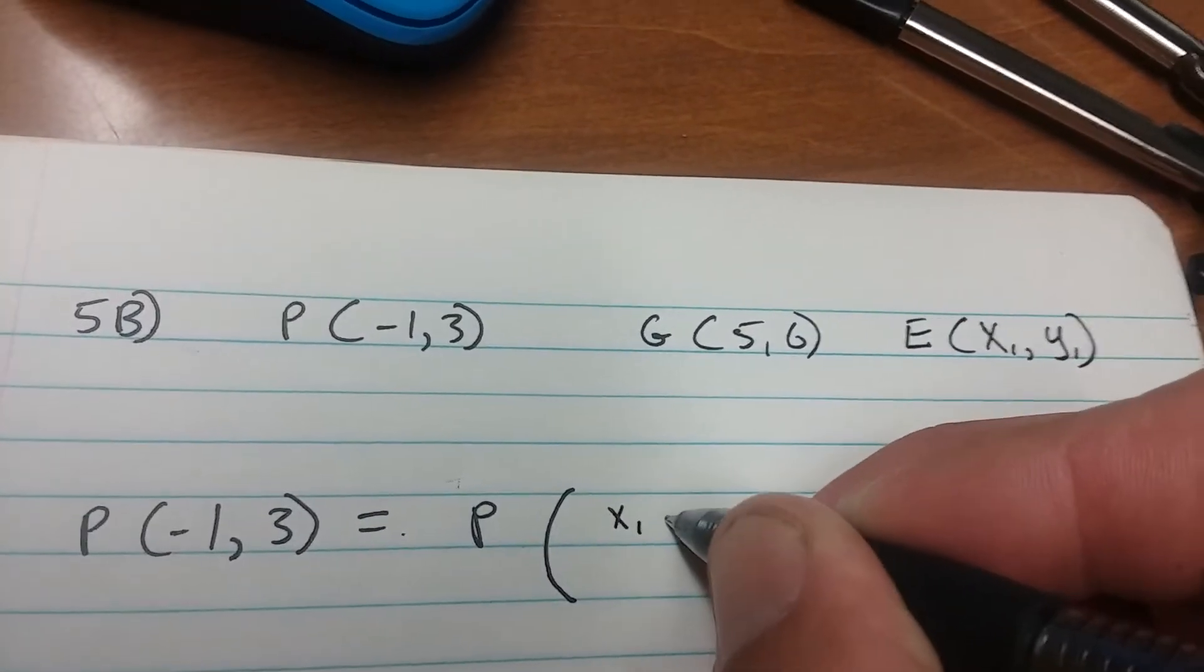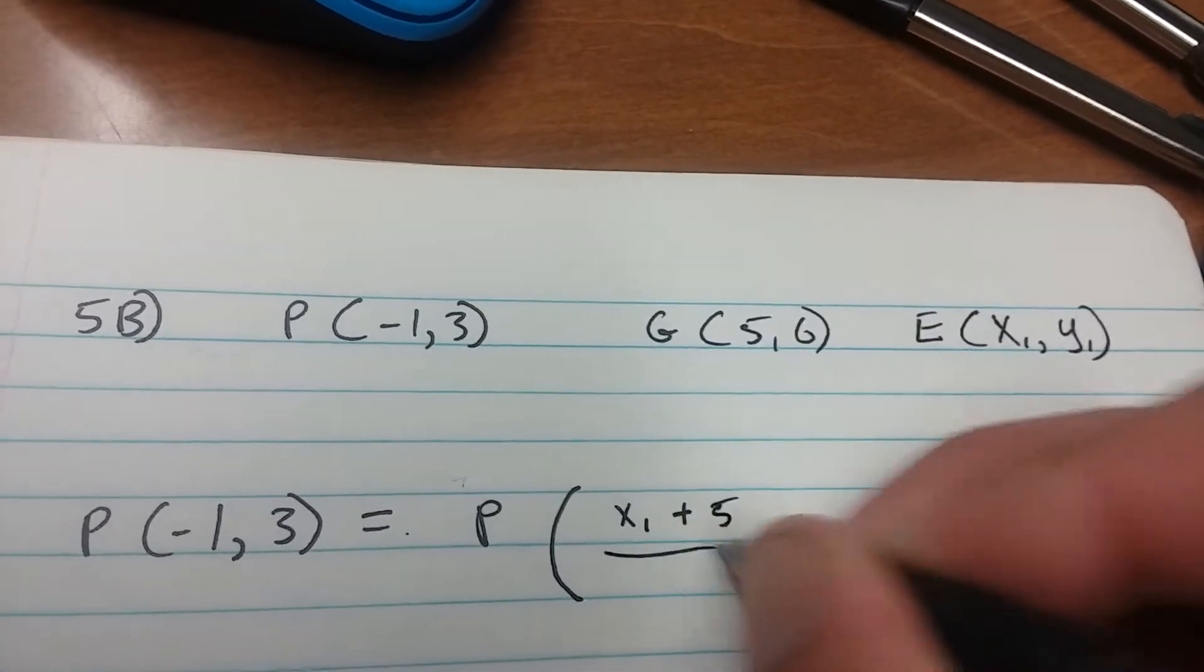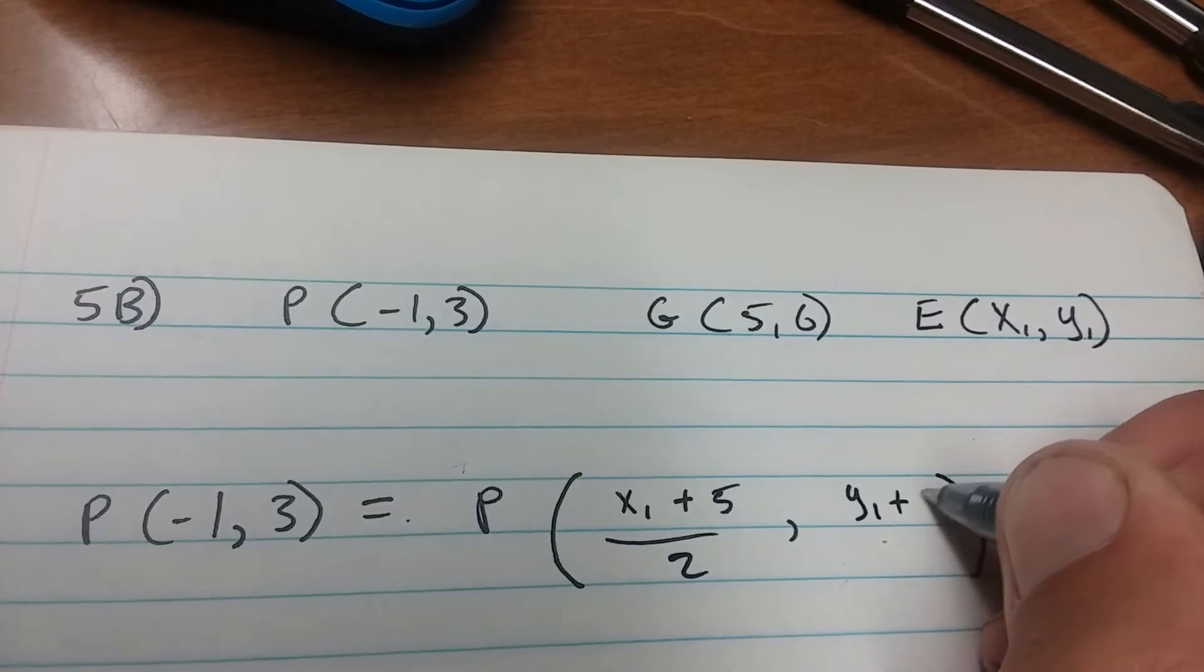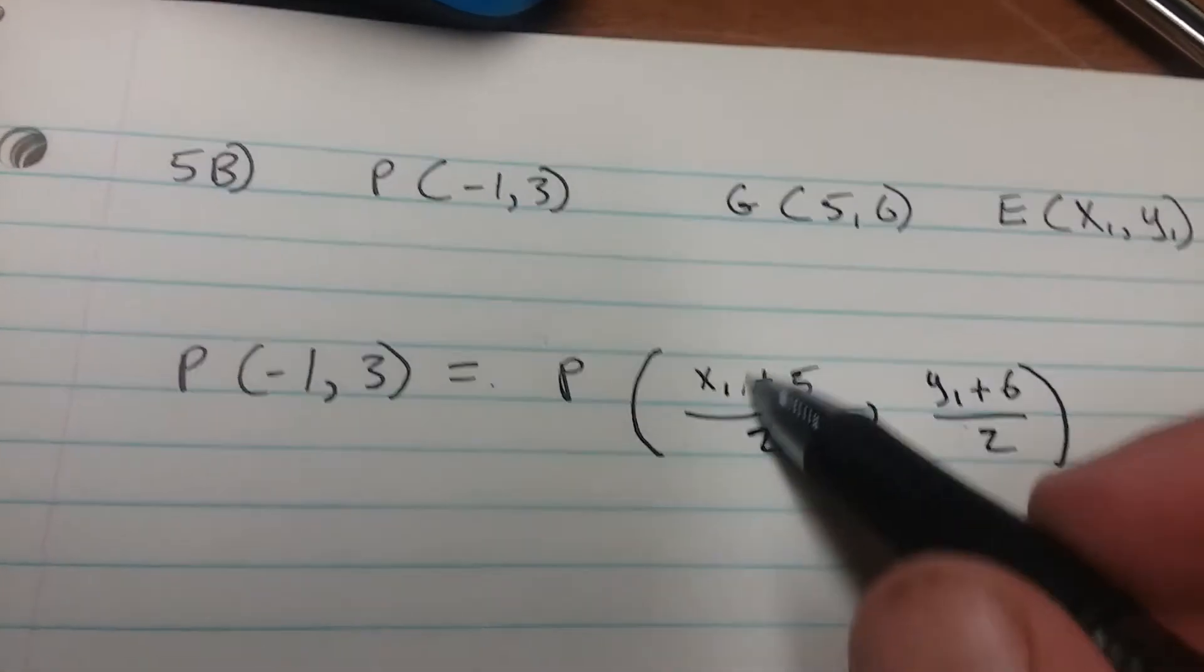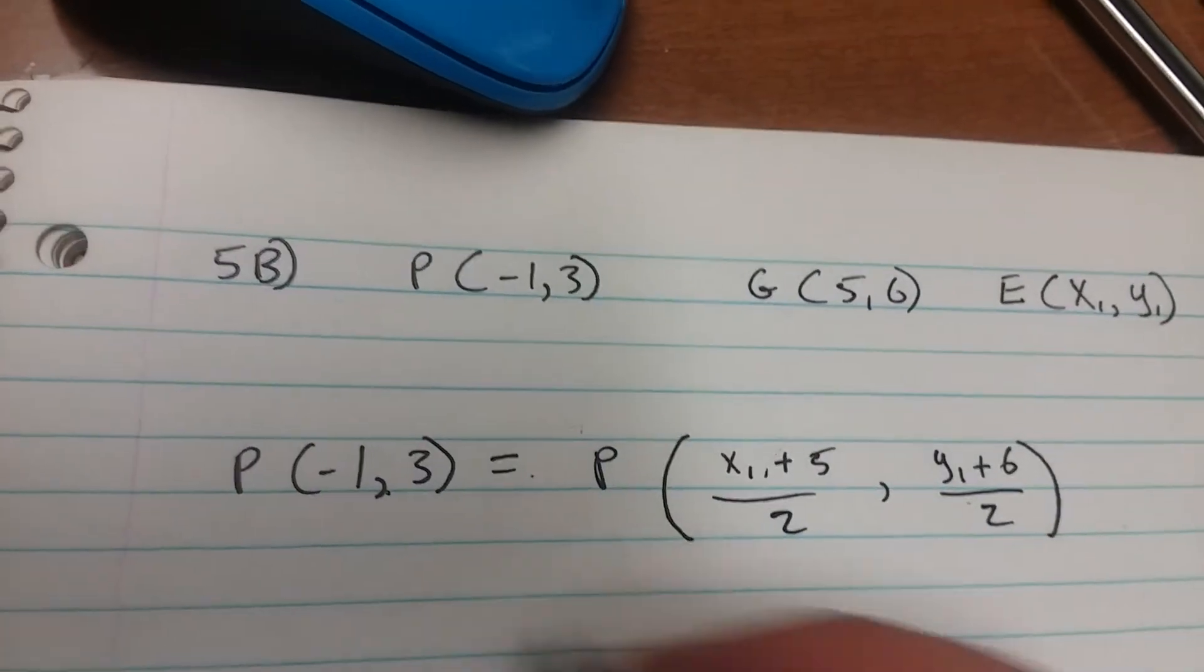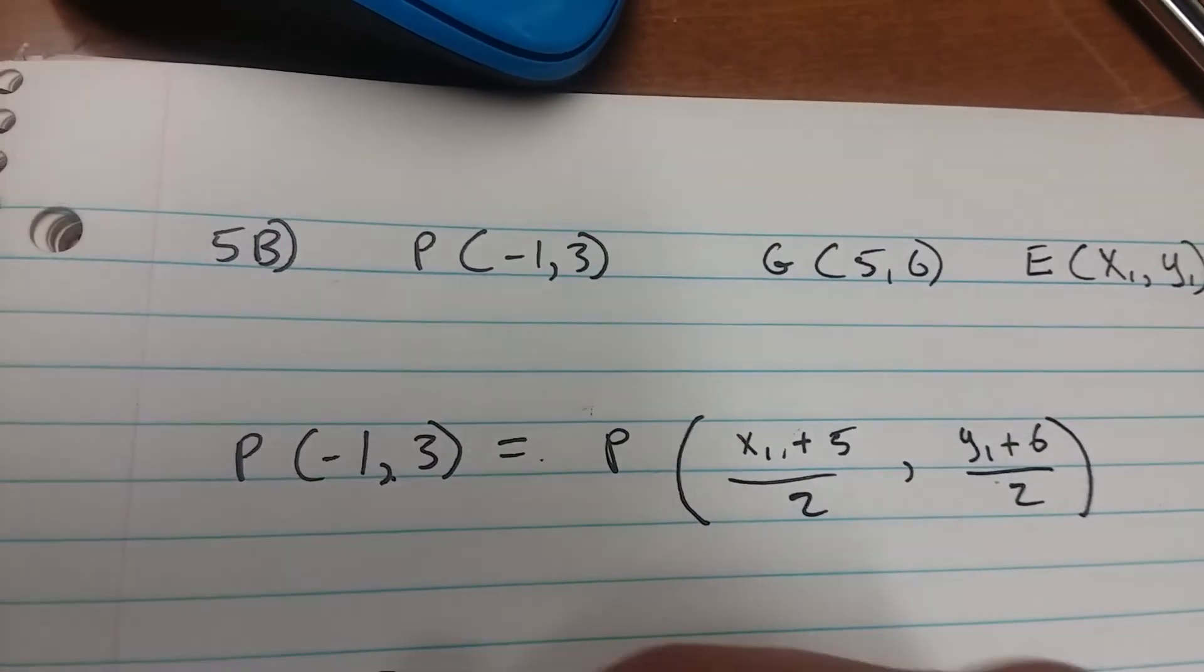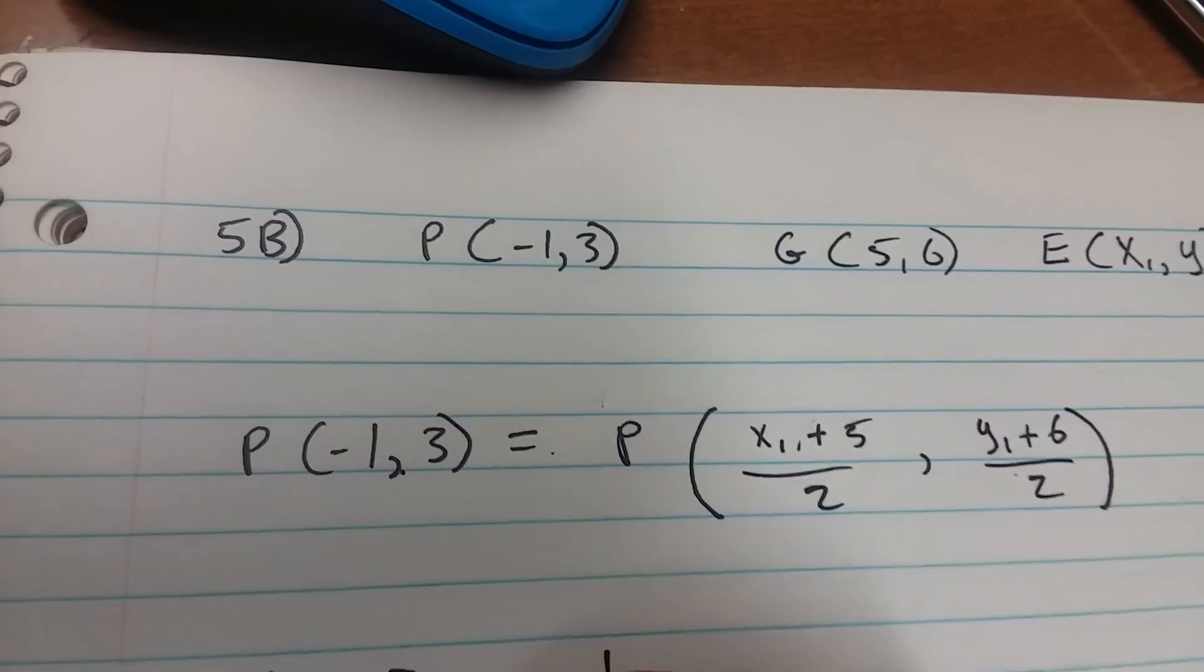All right, we're going to set this equal to negative 1. So you have x₁ plus 5 over 2 equals negative 1. Oops, that's supposed to be a 2 there.